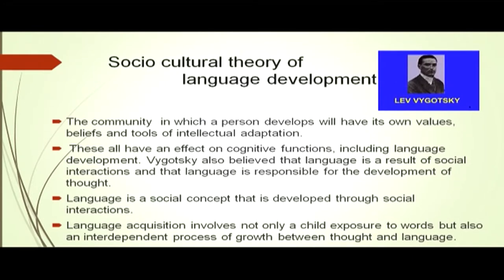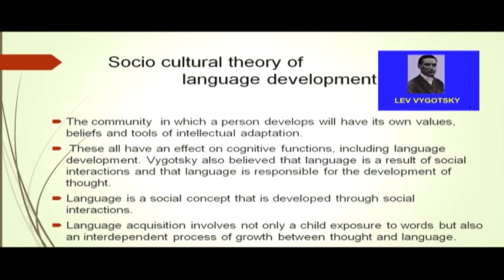Vygotsky gave his socio-cultural theory of language development. According to Vygotsky, the community in which a person develops will have its own values, beliefs and tools of intellectual adaptation. These all have an effect on cognitive functions, including language development. Vygotsky believed that language is a result of social interaction and is responsible for the development of thought. Language is a social concept developed through social interaction — a child interacts first with the family and then with the immediate members of the community. Hence, community plays an active role in language development.